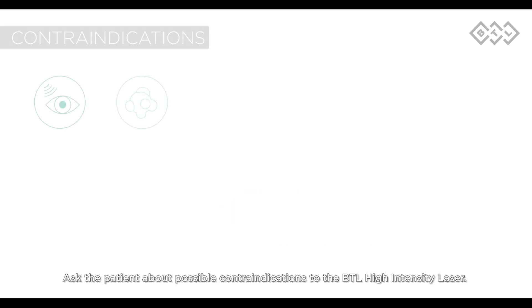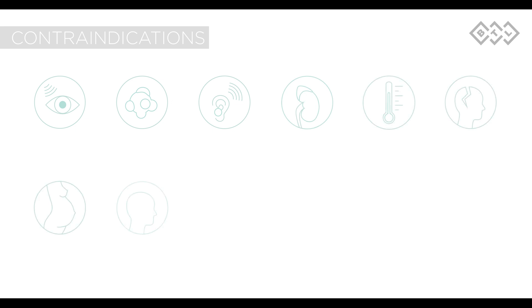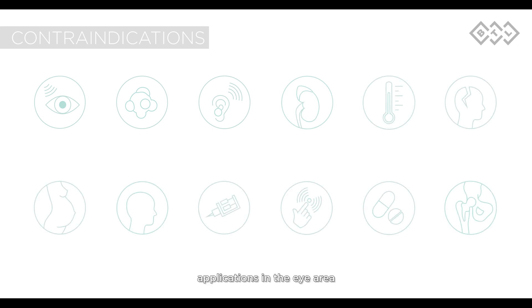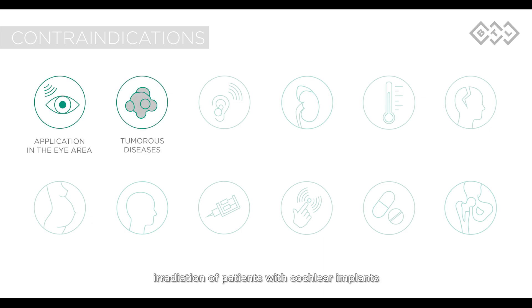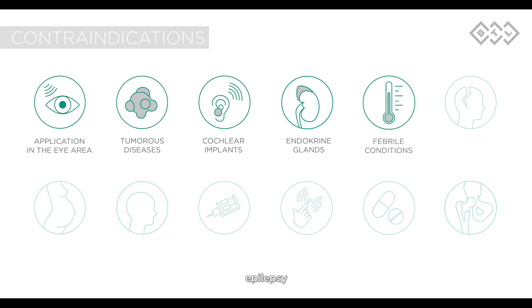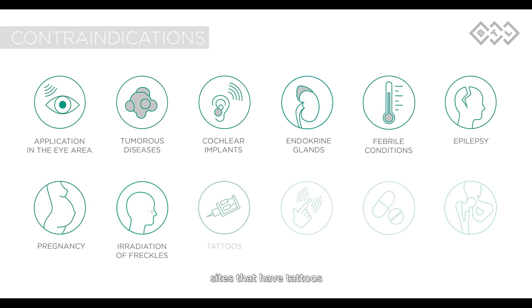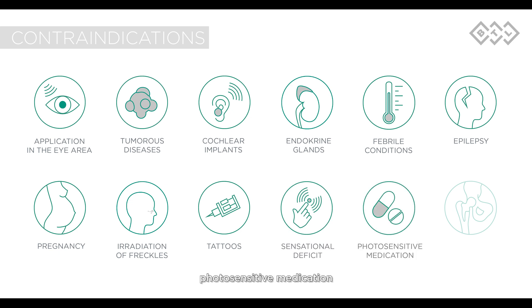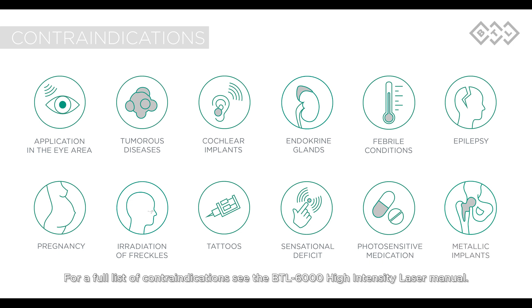Ask the patient about possible contraindications to the BTL high-intensity laser. The basic contraindications are: applications in the eye area, humerous diseases, irradiation of patients with cochlear implants, irradiation of endocrine glands, patients with febrile conditions, epilepsy, pregnancy, irradiation of freckles, sites that have tattoos, sensory deficit, photosensitive medication, and application above metallic implants. For a full list of contraindications, see the BTL 6000 high-intensity laser manual.